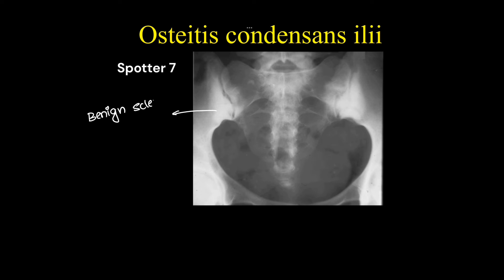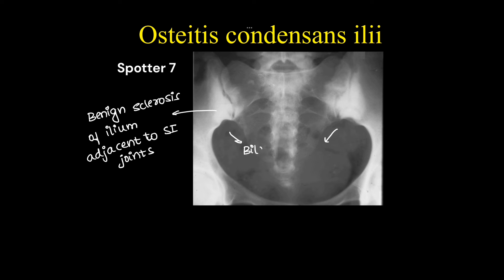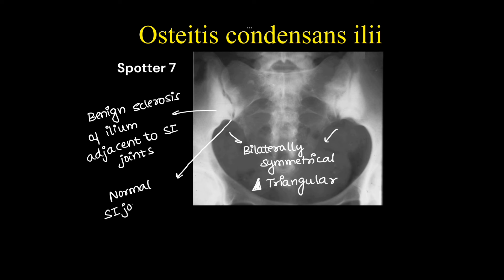This is a case of osteitis condensans ilii. There is benign sclerosis of the ileal side of the SI joints — it will be bilaterally symmetrical and triangular in appearance. There will be normal sacroiliac joints without any irregularities or space obliteration. The differential diagnosis for this is sacroiliac joint arthritis.